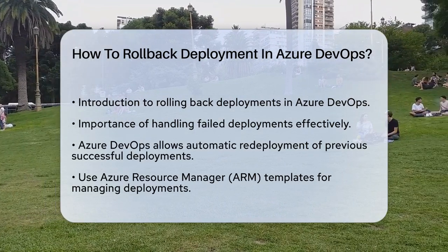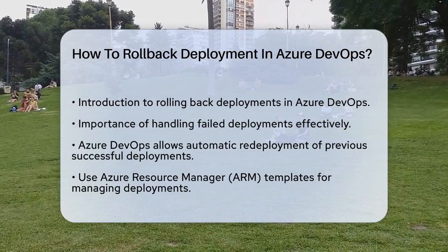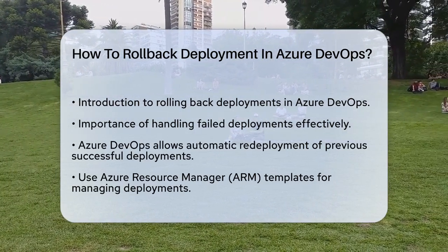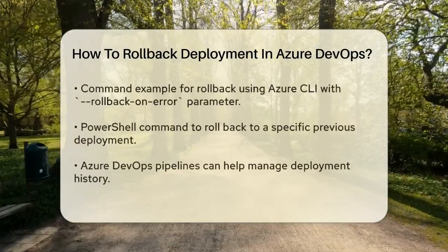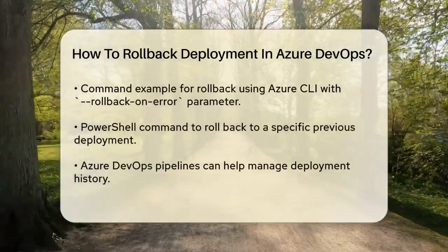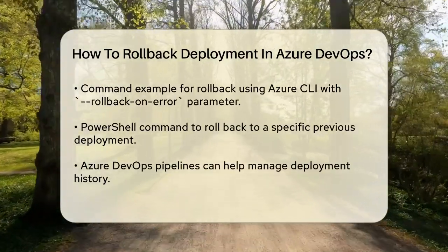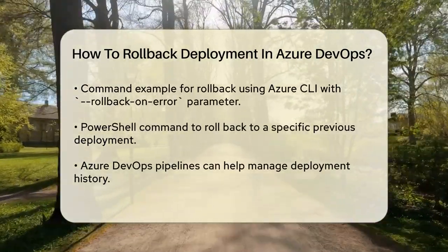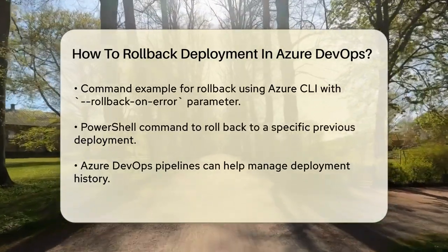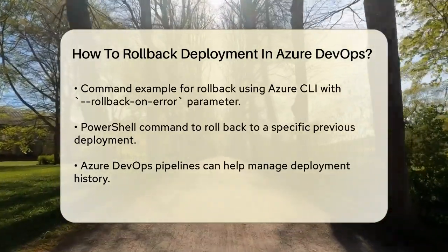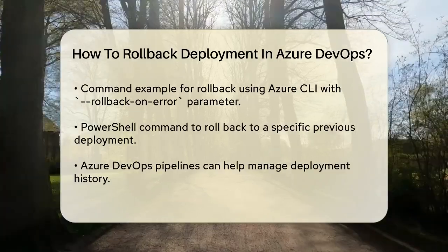For example, using Azure CLI, you can add this parameter to your deployment command: az deployment group create --name example-deployment --resource-group example-group --file storage.json --parameters storageAccountType=Standard --rollback-on-error. This command will automatically redeploy the last successful deployment if the current one fails.